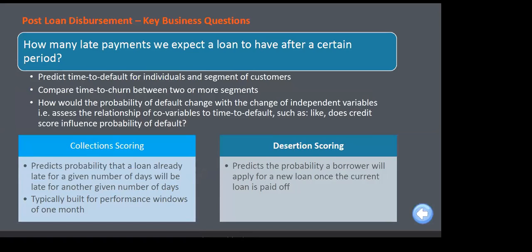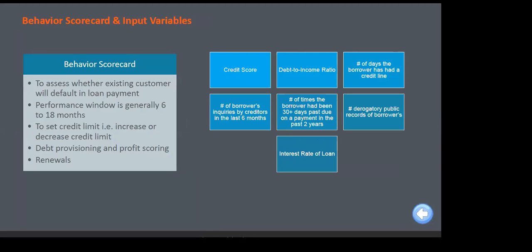The post-loan disbursement part: the key business question is how many debt payments we expect a loan to have after a certain period. We predict time to default for individual customer segments — what is the probability a customer will default after six, eight, or nine months. We also predict the number of days of default: will the person default by 30, 45, or 60 days? The third part is whether we can sell a new loan to that customer. The pre-loan model is called an application scorecard; the post-loan model is called a behavior scorecard.